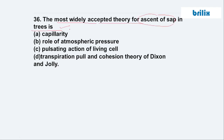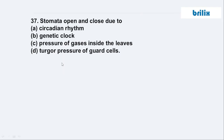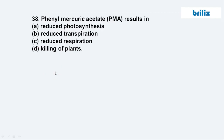Question 36: The most widely accepted theory of ascent of sap in trees — as discussed in NCERT — is the transpiration pull and cohesion theory of Dixon and Joly, option D. Question 37: Stomata open and close due to — as per the potassium influx and efflux theory — the turgor pressure of the guard cells, option D.